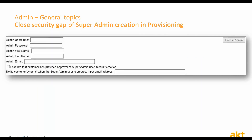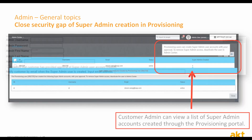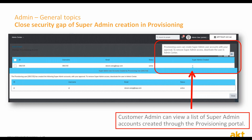Previously, customers did not have direct visibility over who created super admin accounts via provisioning. This caused provisioning system weakness and was a top security issue. The manage provisioning access tool has been enhanced so that customer admins can view a list of super admin accounts created through the provisioning portal. When a provisioning user creates a super admin account in the provisioning portal, the provisioner must confirm that the customer has provided approval of super admin user account creation and notify the customer by email. Customer admins can now view the list of super admin user accounts created by the provisioner.